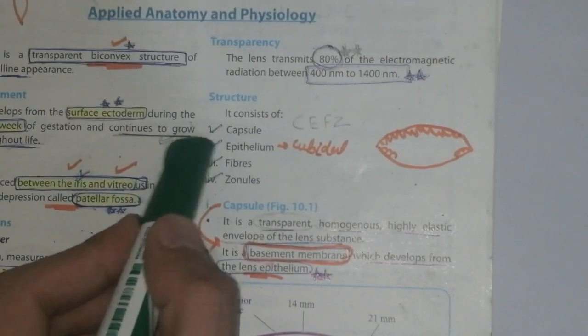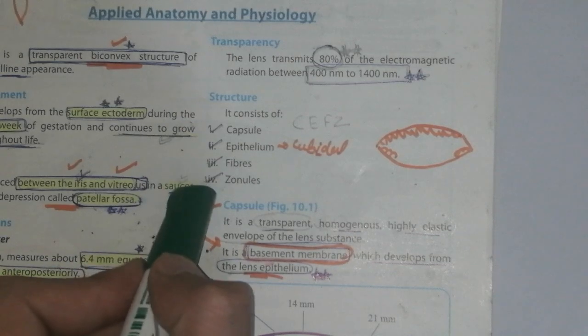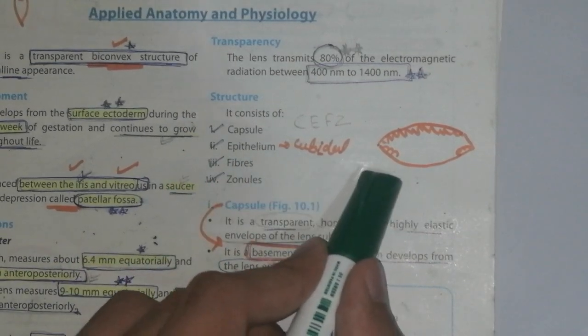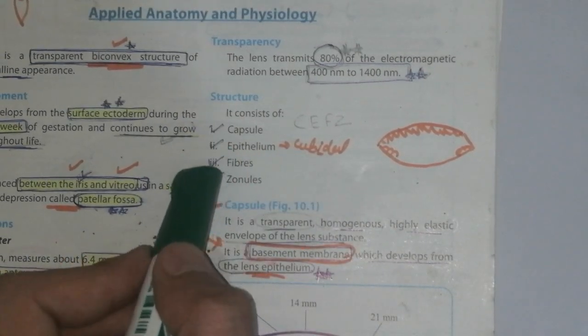Structure of the lens: it consists of capsule, epithelium, fibers, and zonules. You can see the diagram here is the capsule, epithelium, fibers, and zonules.